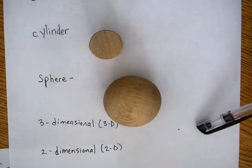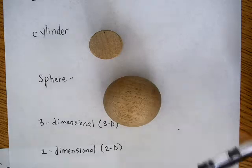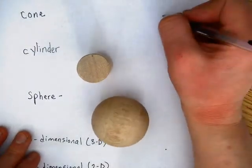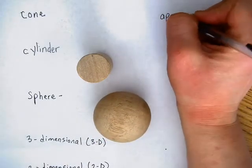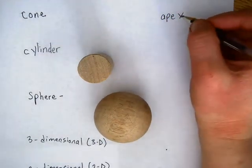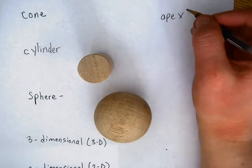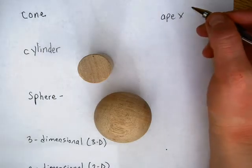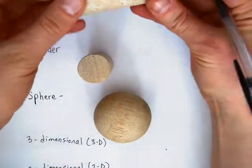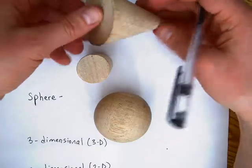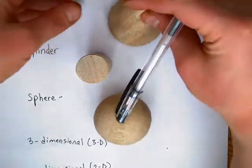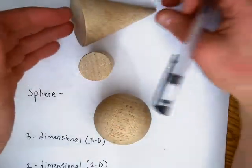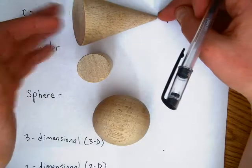We have a couple of words that are specific to certain shapes. For example, the word apex is specific to a cone. The apex of a cone is the tip — the point at the top. A cone has a circular bottom and comes together at a point, and that point is called the apex.